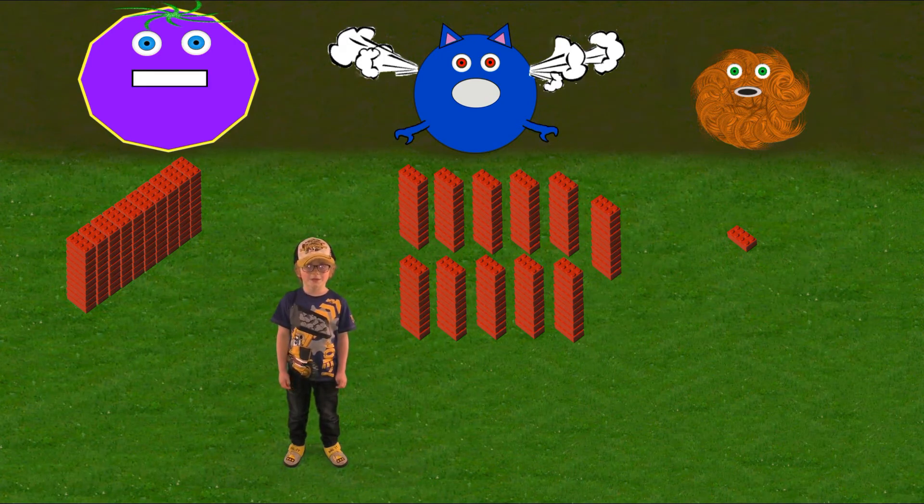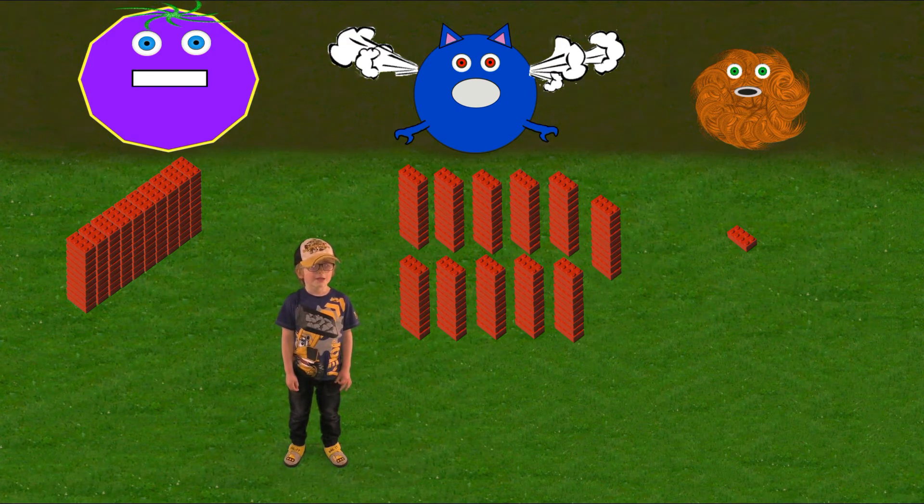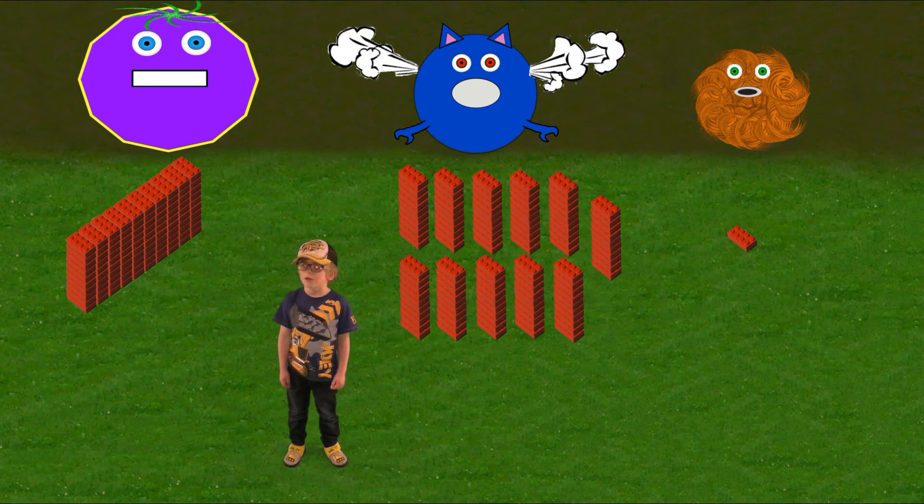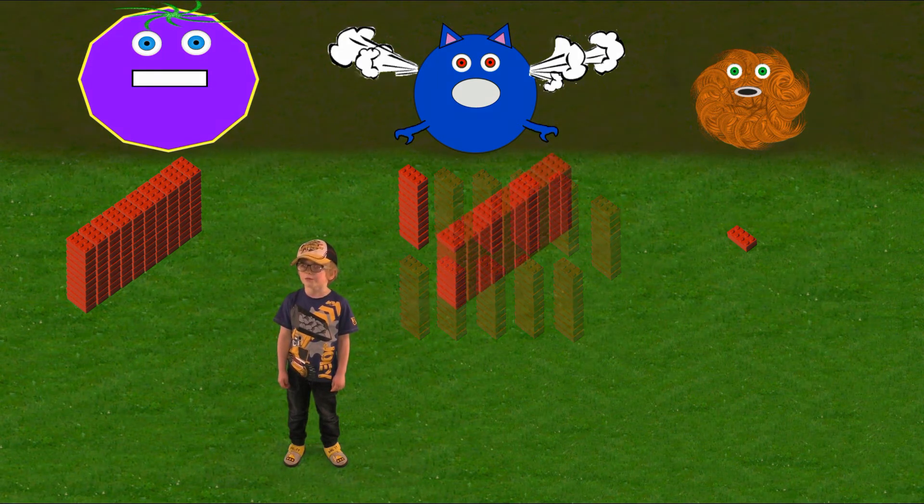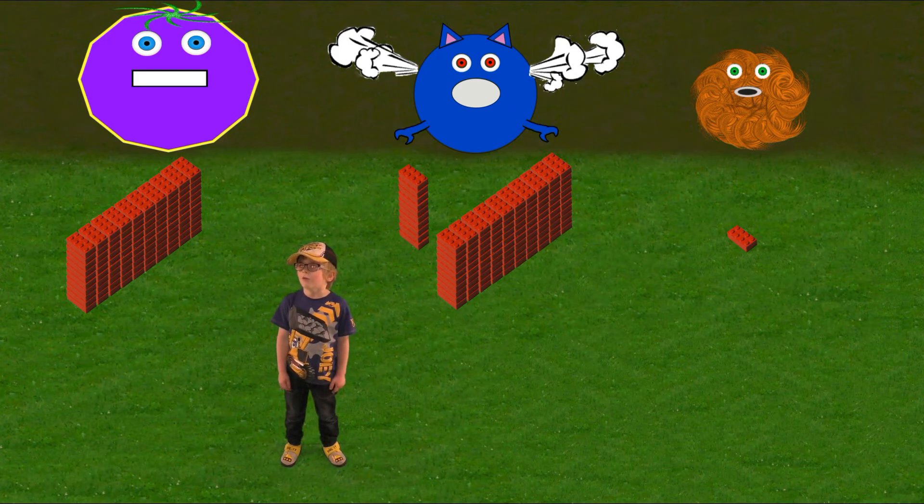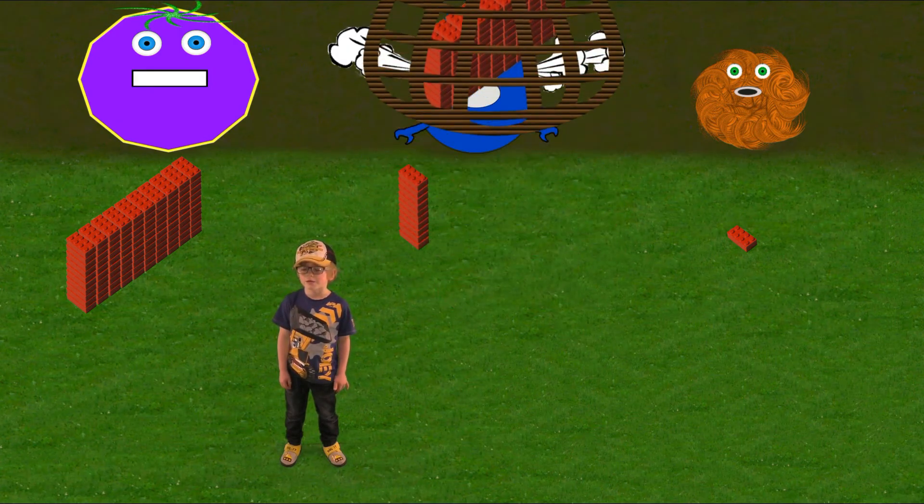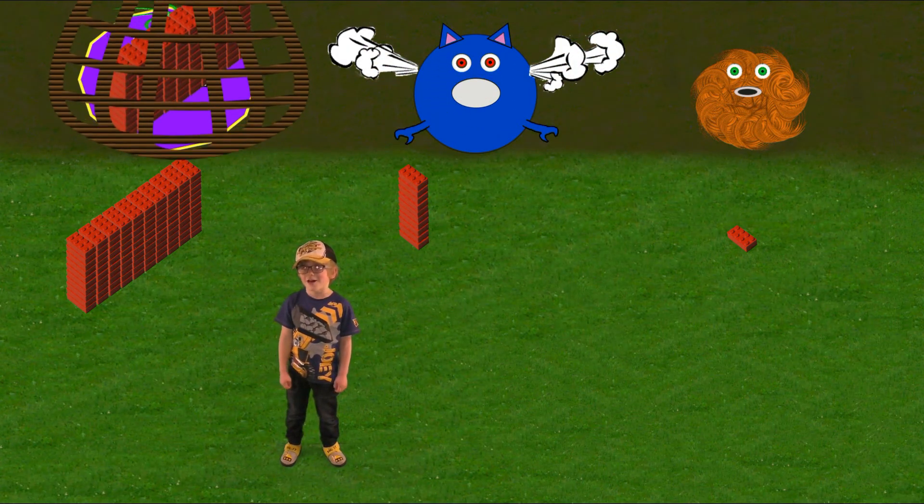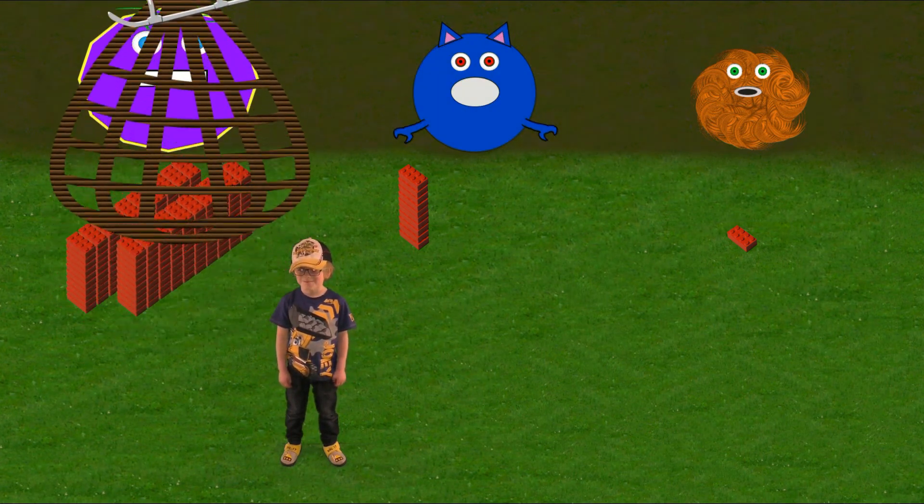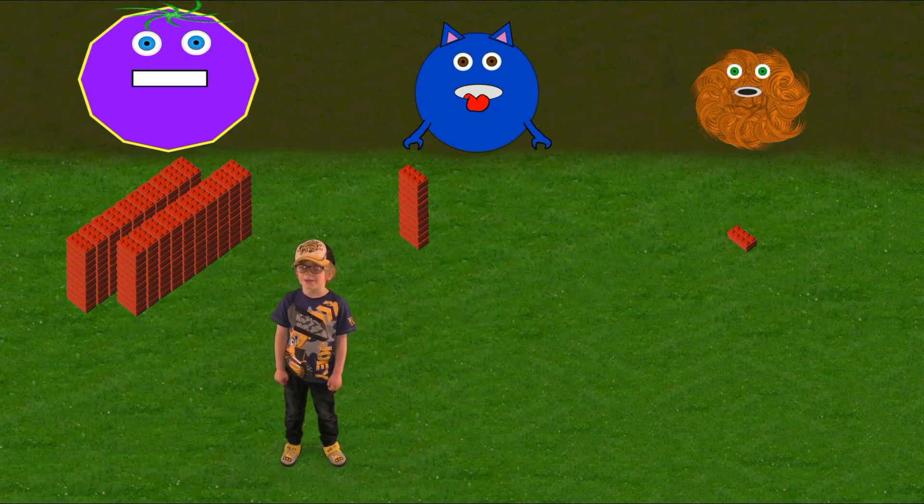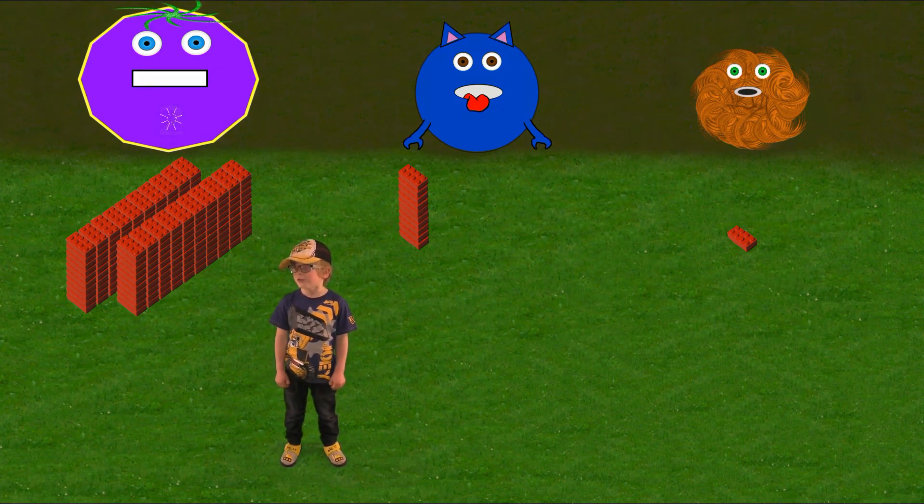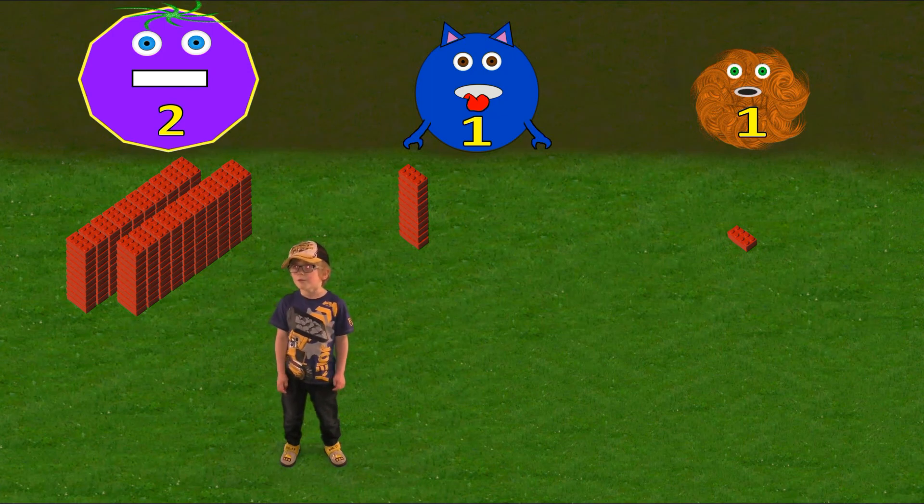The tens monster is mad too. He now has eleven stacks of ten. Ten tens is a hundred, so let's make one of those into a hundred. Now we can move it across to a monster who is big enough to look after it, the hundreds monster. That's good, now all the monsters are happy again. How many bricks have we got? Two hundred and eleven. Awesome.